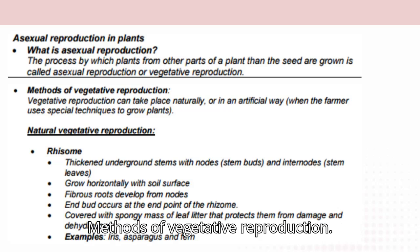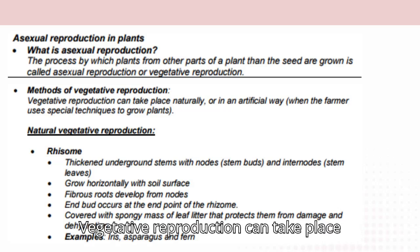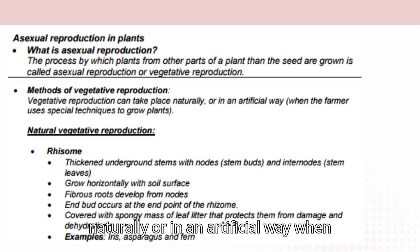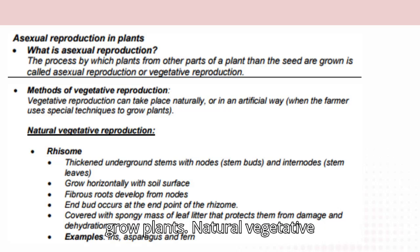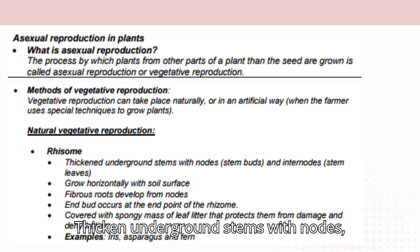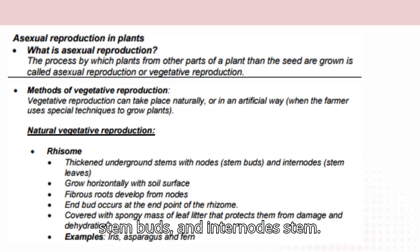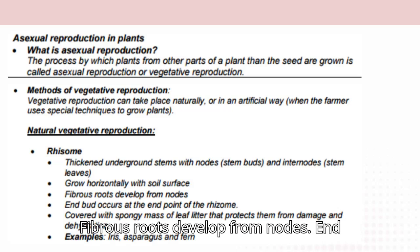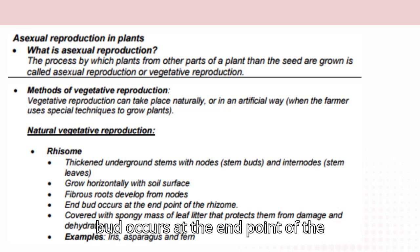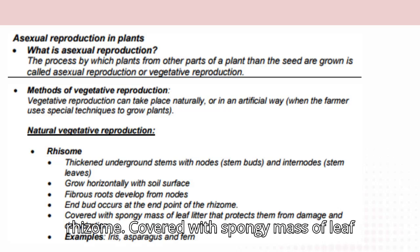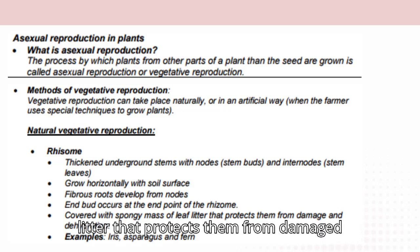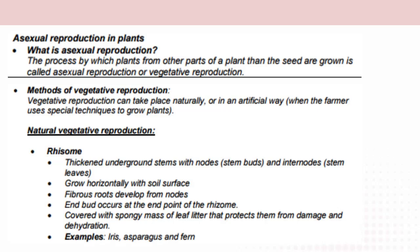Methods of vegetative reproduction: vegetative reproduction can take place naturally or artificially when the farmer uses special techniques to grow plants. Natural vegetative reproduction — rhizomes: thickened underground stems with nodes, stem buds, and internodes. Stem leaves grow horizontally with the soil surface. Fibrous roots develop from nodes. An end bud occurs at the endpoint of the rhizome, covered with a spongy mass of leaf litter that protects them from damage and dehydration. Examples: iris, asparagus, and fern.